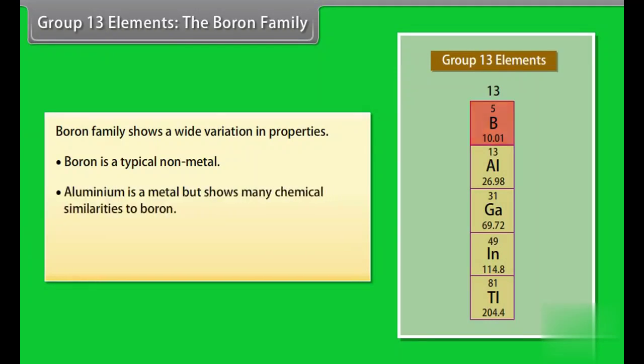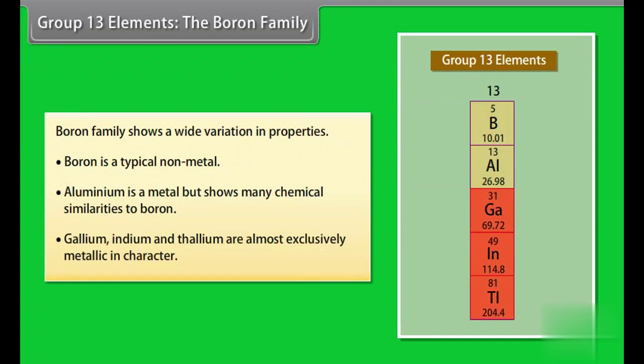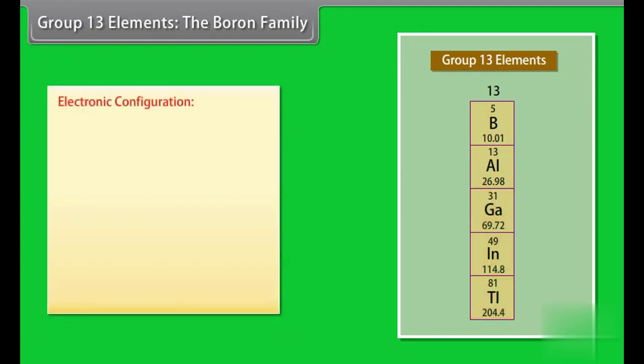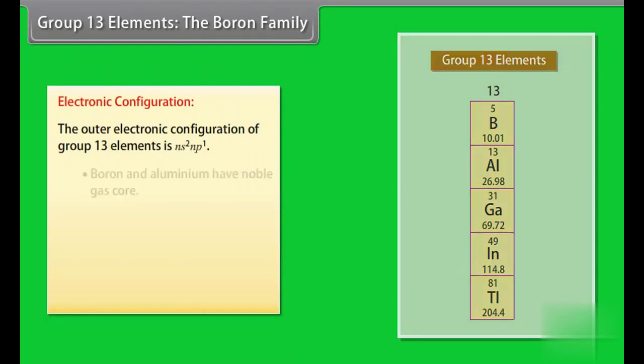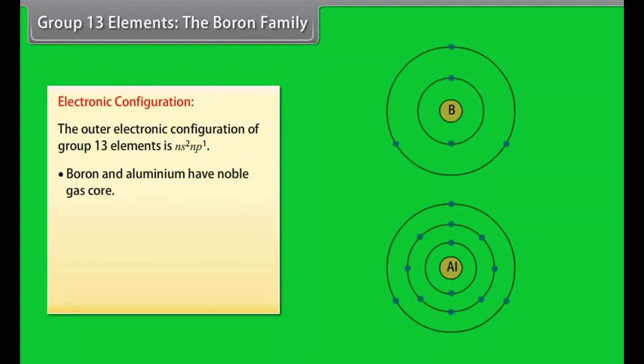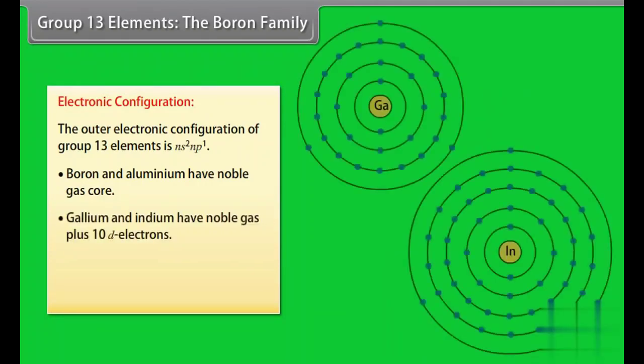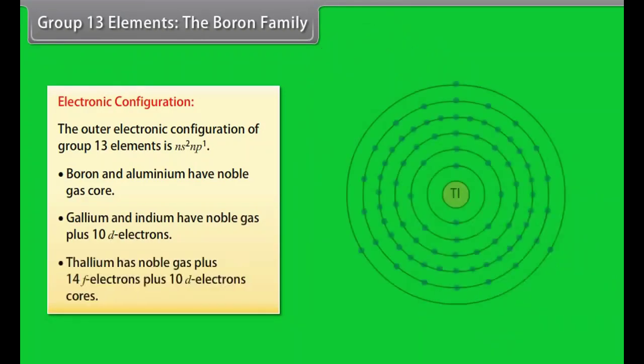Group 13 elements. The boron family. Boron family shows a wide variation in properties. Boron is a typical non-metal. Aluminium is a metal but shows many chemical similarities to boron. Gallium, indium and thallium are almost exclusively metallic in character. Electronic configuration: the outer electronic configuration of group 13 elements is ns2 np1. Boron and aluminium have noble gas core. Gallium and indium have noble gas plus 10d electrons. Thallium has noble gas plus 14f electrons plus 10d electron cores.